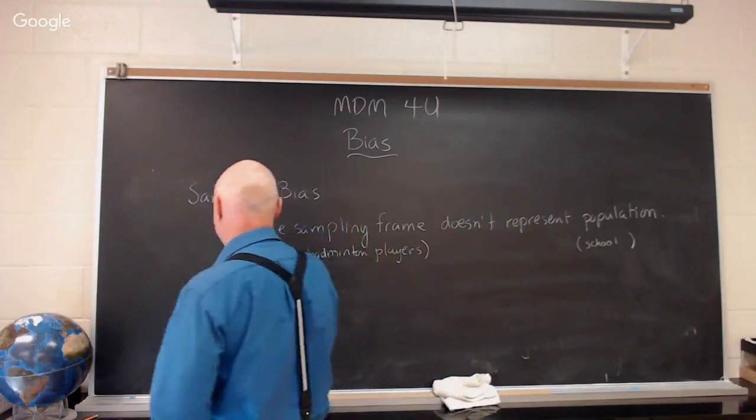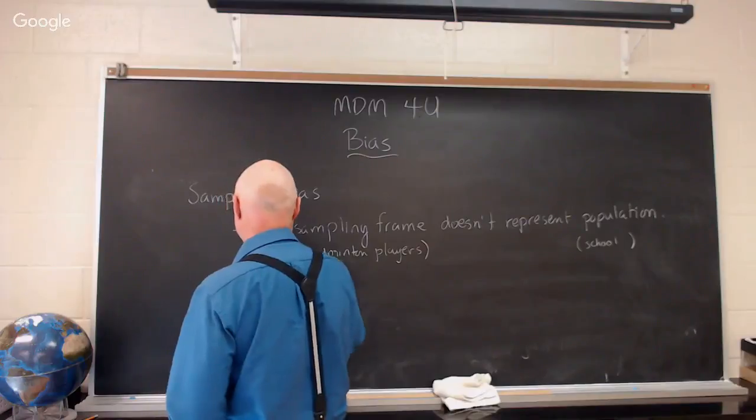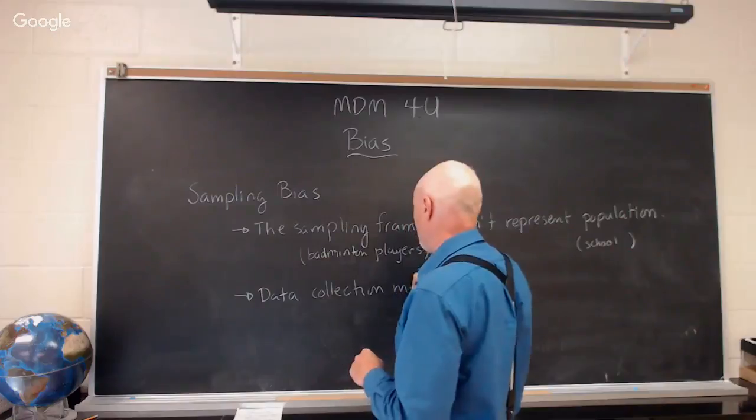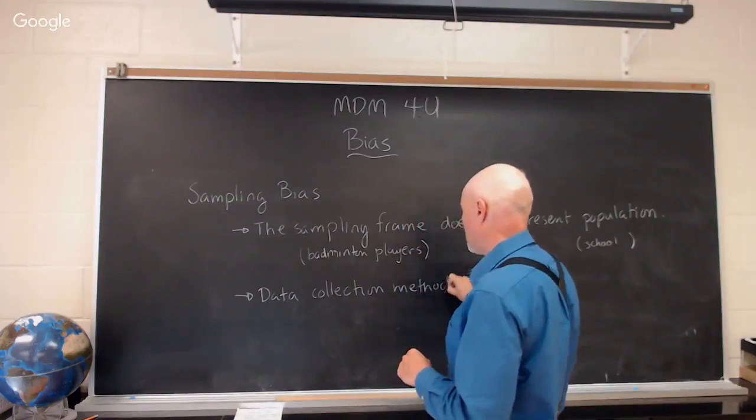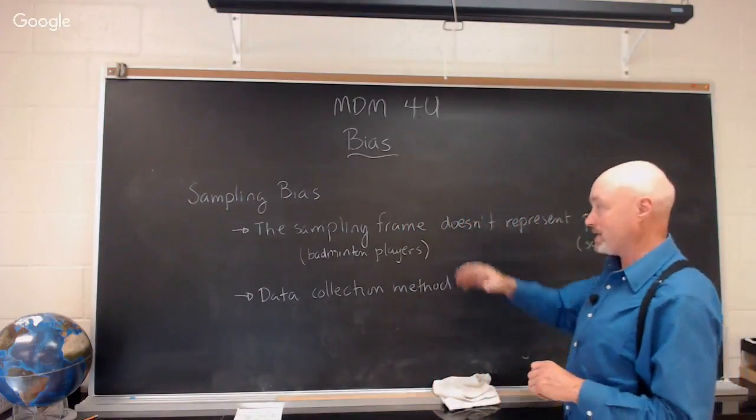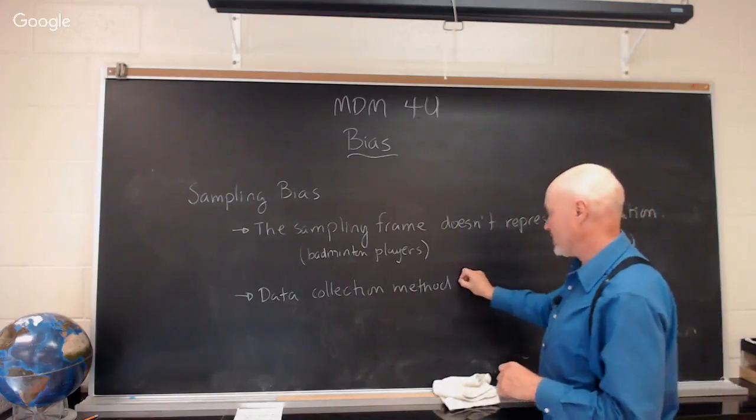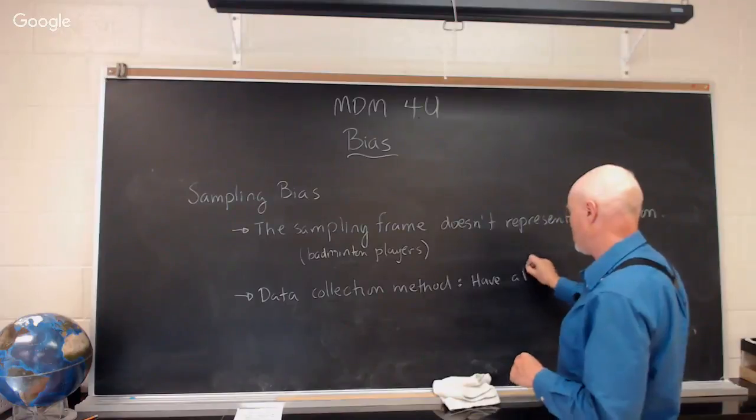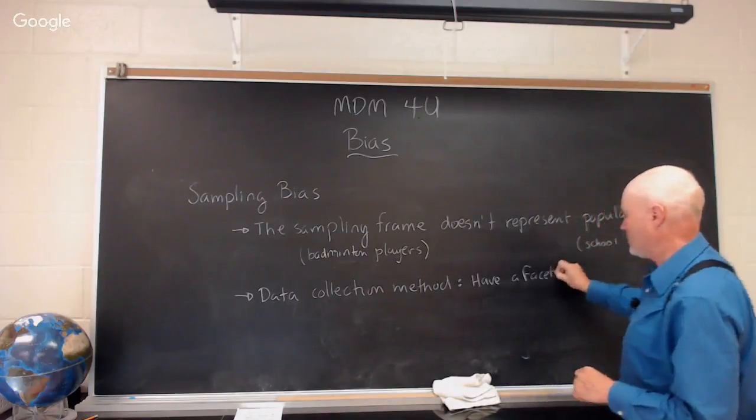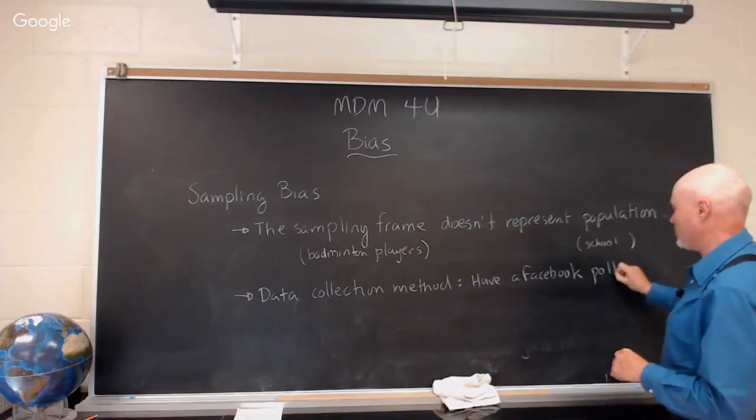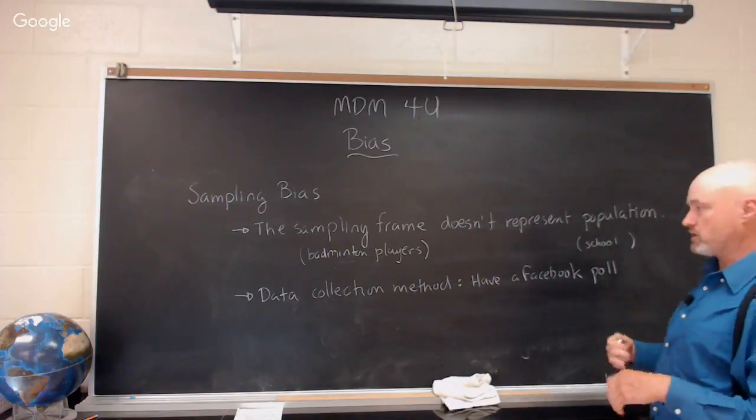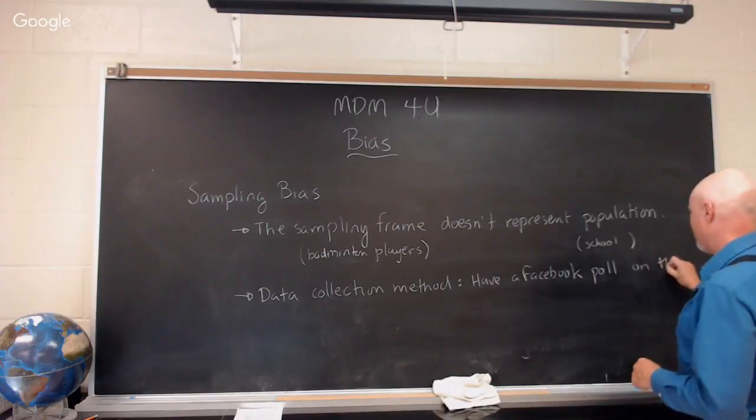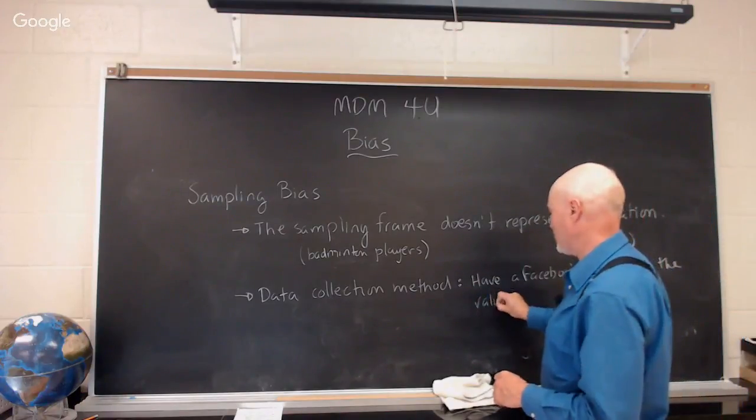The second problem you can run into is that your data collection method can actually bias the sample that you get. For example, you could have a Facebook poll. This is the way you're collecting your data. You've decided you're going to use a Facebook poll, and you're going to have that poll on the value of social media.